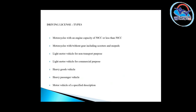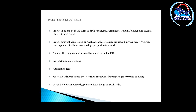Types of driving licenses based on vehicle category include: vehicles with engine capacity of 50cc or less; motorcycles without gear including scooters and mopeds; motorcycles for non-transport purpose; Light Motor Vehicle; Light Motor Vehicle for Commercial Purpose; Heavy Goods Vehicle; Goods Carriage; Heavy Passenger Vehicles; and Motor Vehicle of a Specified Description.